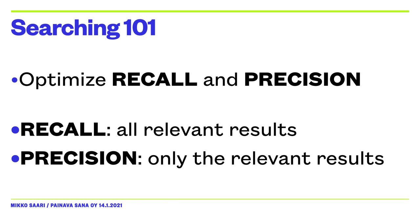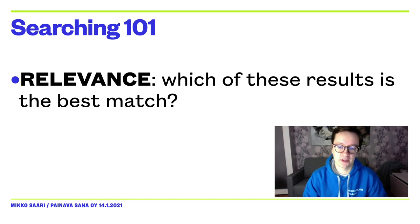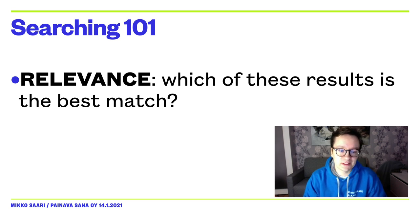Perfect precision is easy enough in theory. If we return all posts and only the posts that have the search term, we should be fine. However, that's not good enough in actual use. Getting lots of results that only include relevant results is fine, but most users don't actually want to get 100 results with perfect precision. Often the ideal case would be finding that one post that matches the topic as well as possible. Thus, what really counts is relevance, not pure precision or pure recall.